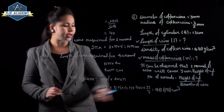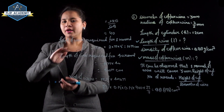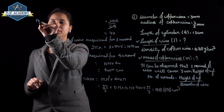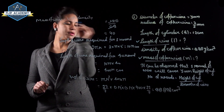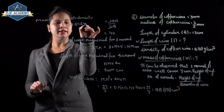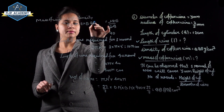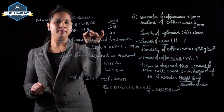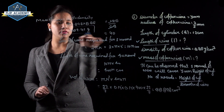Volume of the wire is 88.898 cm³. Now find the mass of the wire. Mass = volume × density = 88.898 × 8.88 = 789.41 g. So the mass of the wire is 789.41 g.